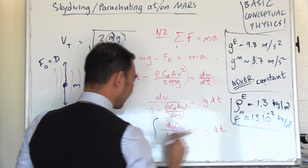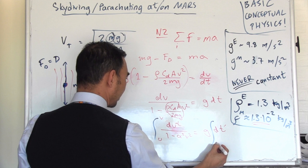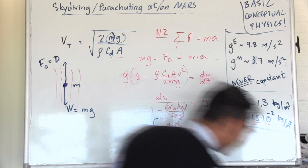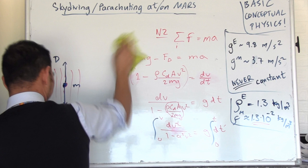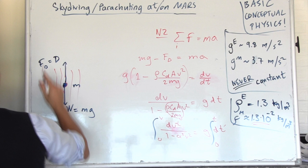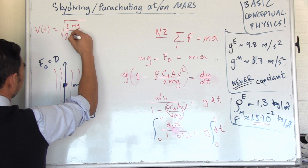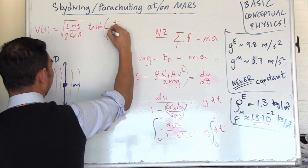So dv divided by 1 minus alpha squared v squared equals g dt. Then you integrate from 0 to v, and you rename this to v prime, 0 to t. You will get t as a function of v, and then you can convert so that you get v as a function of t. V as a function of t looks something like this.